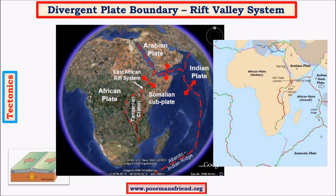Before studying the African rift system, we should understand the different plates involved. The major plates are the African continental plate, also called the Nubian plate, and the Somalian minor plate, which mainly consists of ocean and some parts of Somalia, Tanzania, Kenya, and Madagascar. There is one more important plate: the Arabian plate, which is a minor plate and part of the Eurasian plate. There is constant interaction between these three plates, and this interaction has given rise to the great rift system covering both Africa and some small parts of Asia.